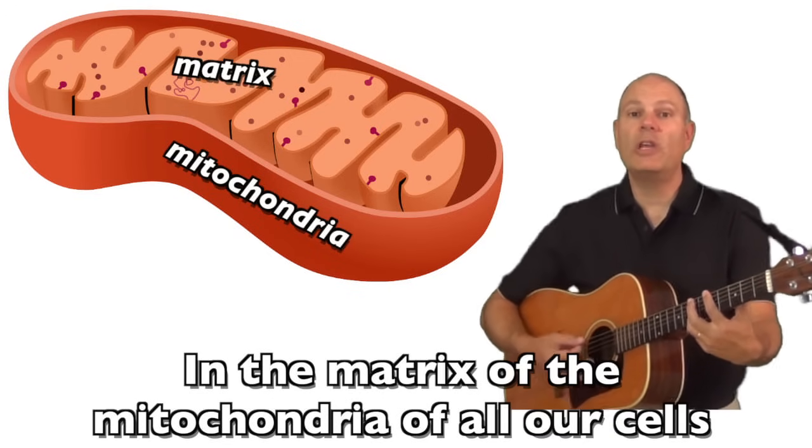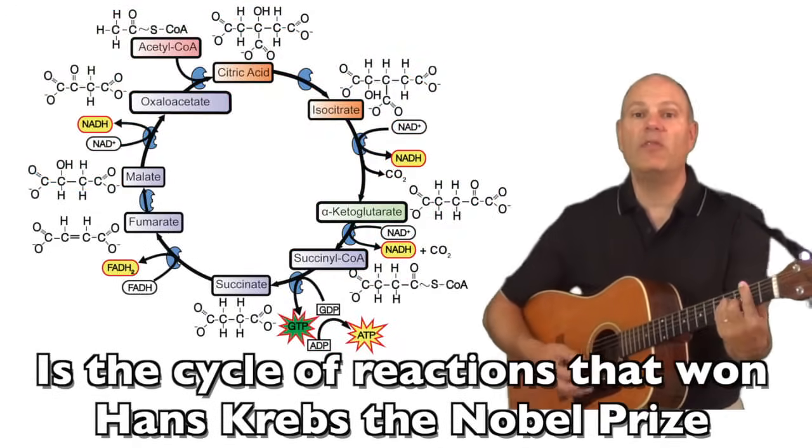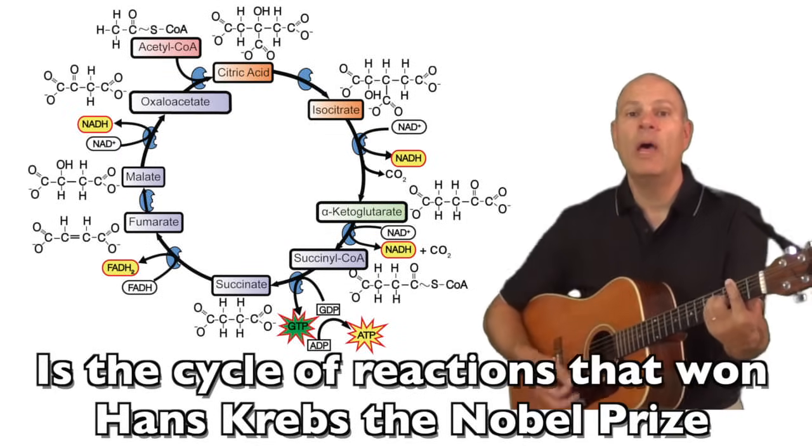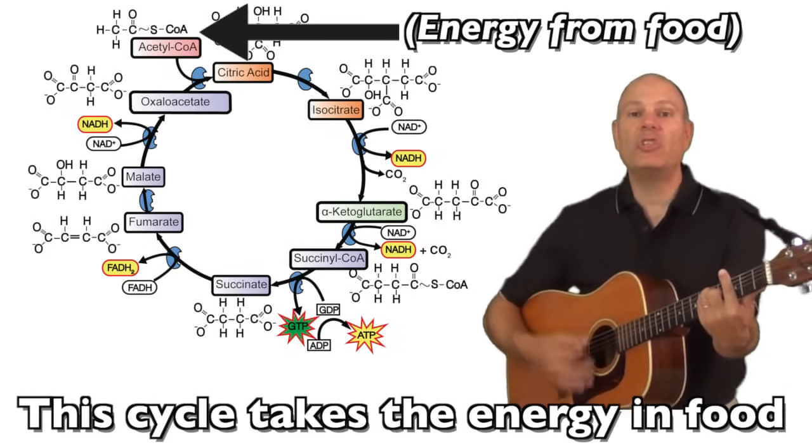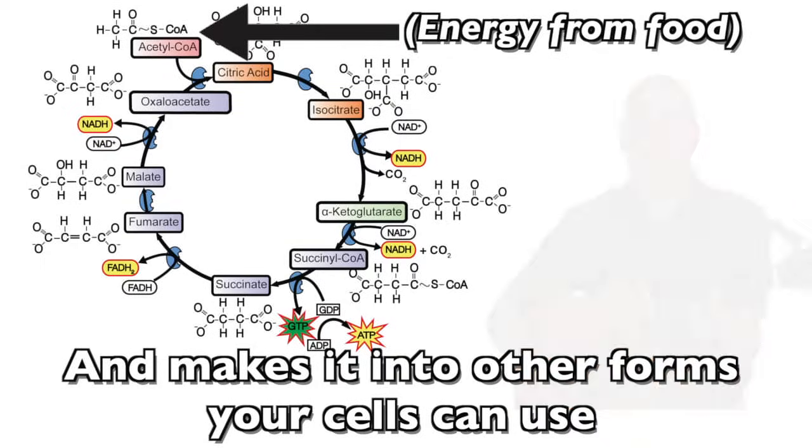In the matrix of the mitochondria of all our cells is the cycle of reactions that won Hans Krebs the Nobel Prize. The cycle takes the energy in food and makes it into other forms your cells can use.